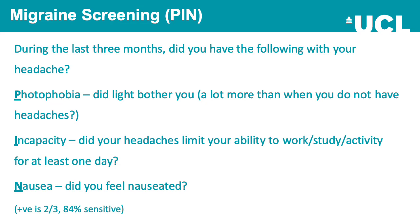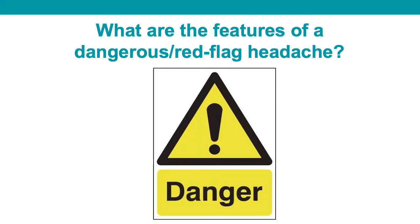A migraine screening tool is known as PIN, which has a sensitivity of about 84 percent if two out of three criteria are identified. P for photophobia: did light bother you a lot more than when you do not have headaches? I for incapacity: did your headaches limit your ability to work, study, or be active for at least one day? N for nausea: did you feel nauseated? If two out of the three are positive, the sensitivity for migraine is about 84 percent.